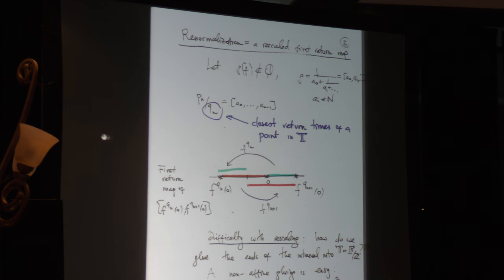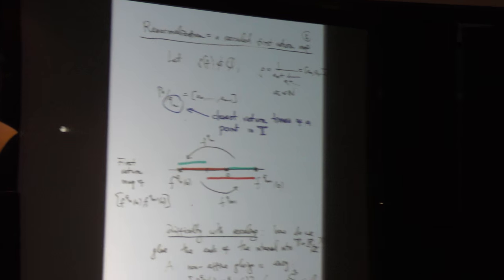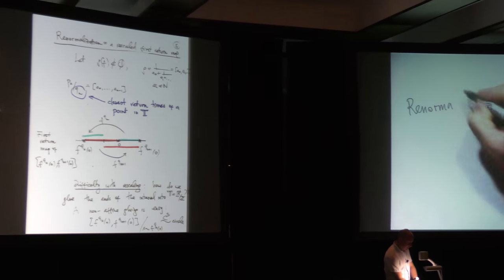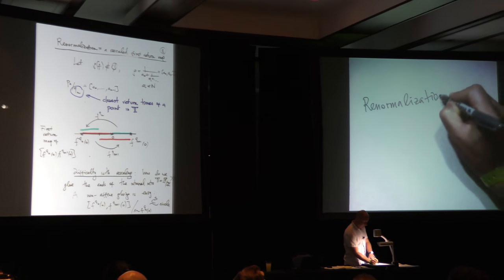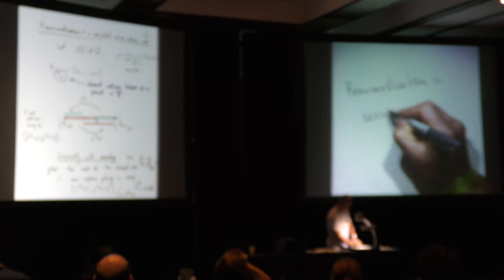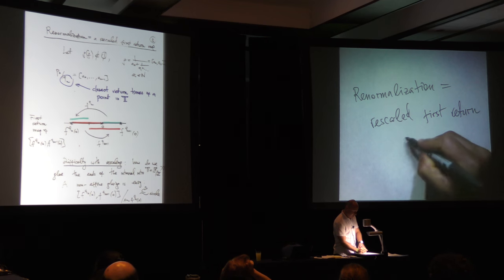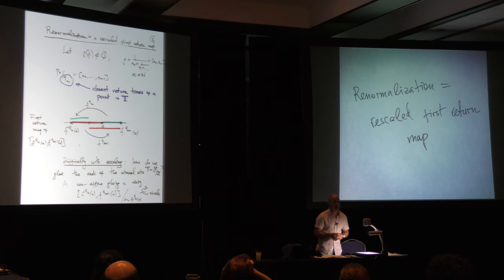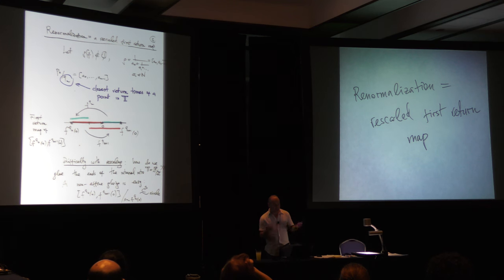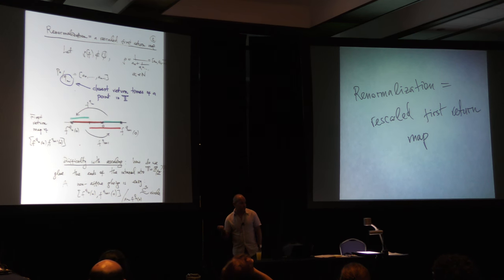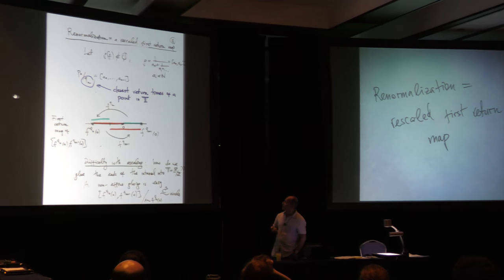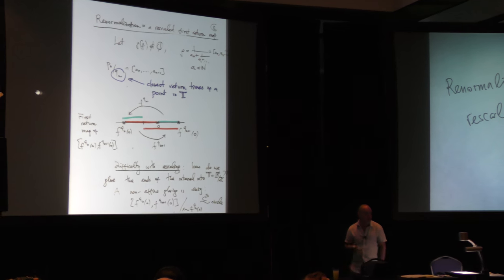Now, renormalization. Let me make a meta-definition: renormalization is a rescaled first return map. This is the meta-definition of renormalization in dynamics. I just have to tell you where we consider the first return — on which part of the circle — and how we rescale.